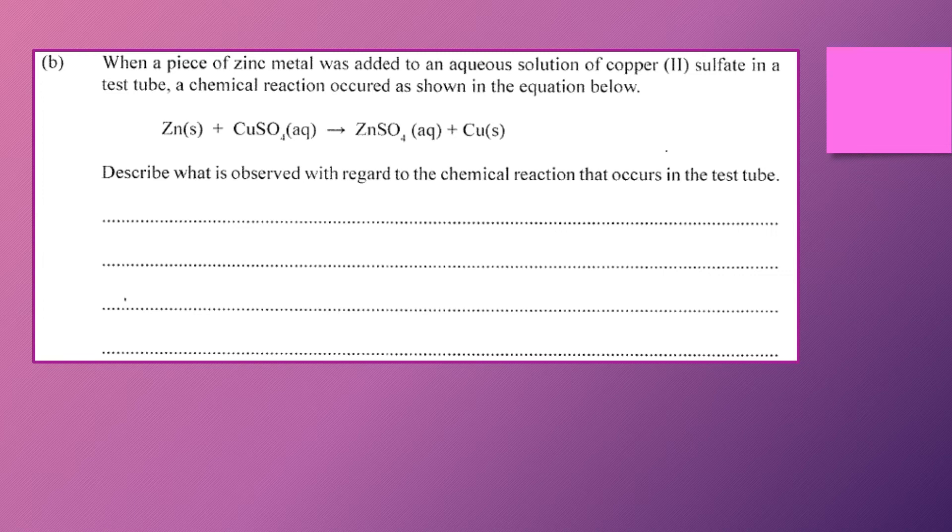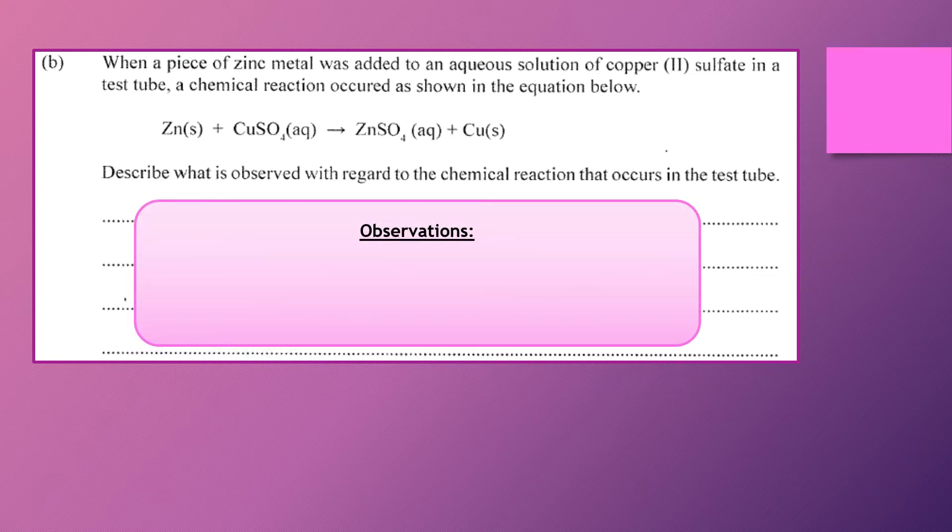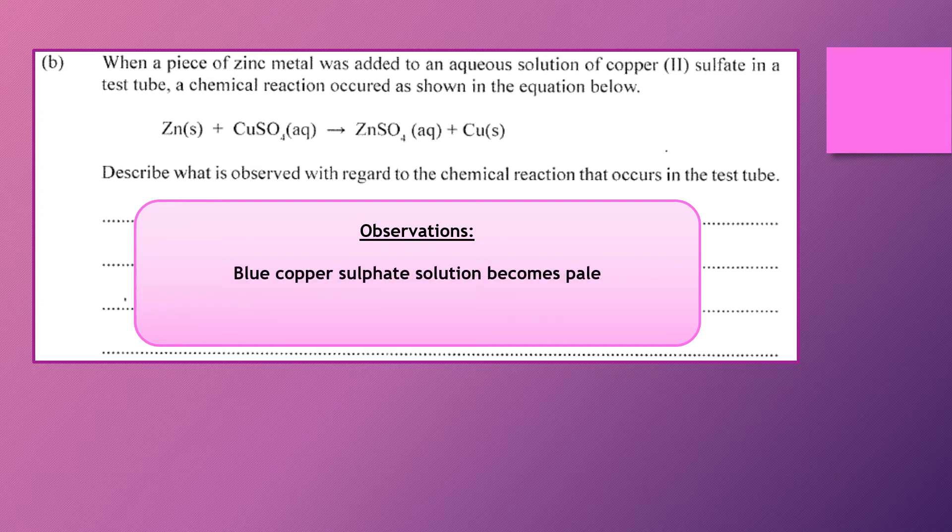So certainly we can see that this is an example of a displacement reaction. So zinc is able to displace the copper sulfate from solution. So what would we observe? Copper sulfate we know is normally blue. So in that reaction, you would notice that the blue color of the copper sulfate is becoming pale. So that's an observation.